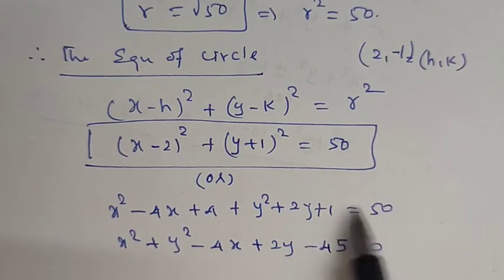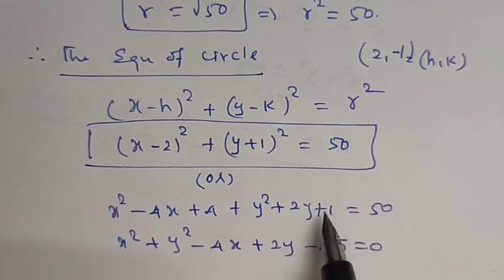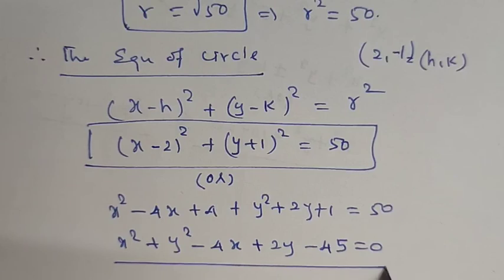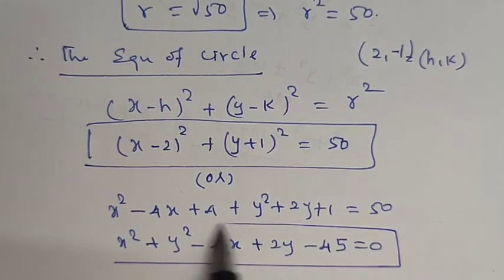So x square plus y square minus 4x plus 2y, and rearranging: 5 minus 50 is equal to minus 45. This is the final equation of the circle.